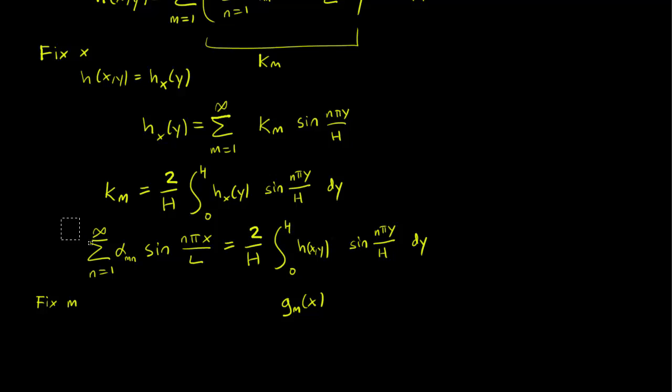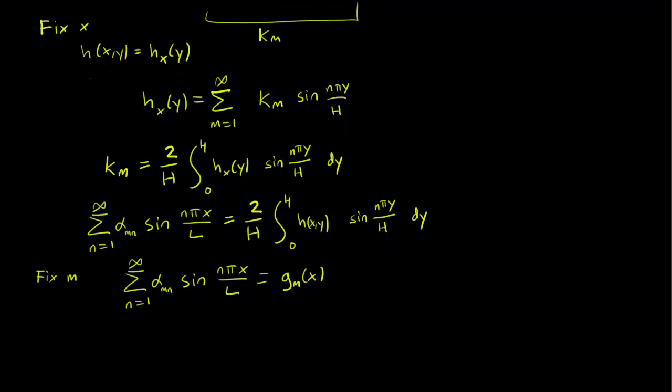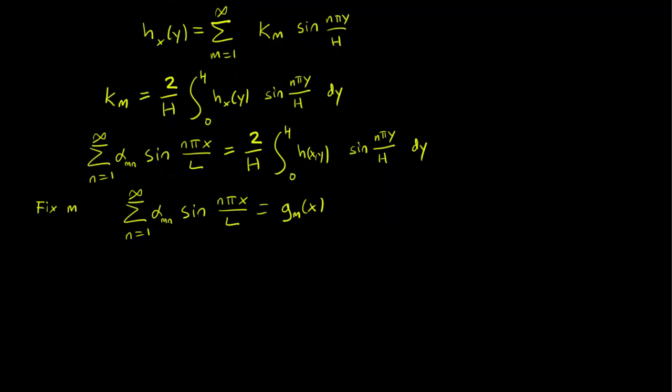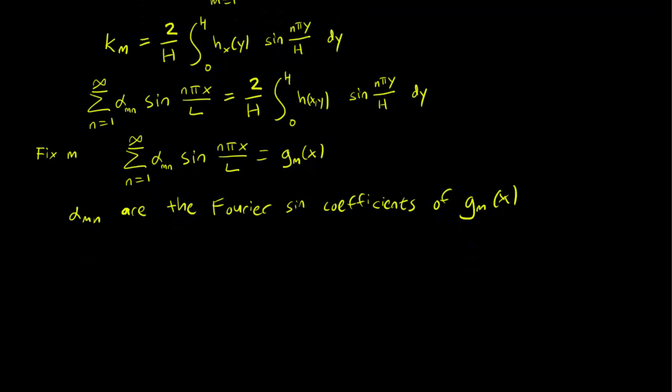And the left-hand side stays the same, of course. But notice now, what we have are that alpha_mn are the Fourier coefficients of g_m(x), the Fourier sine coefficients. And we already know what the formula for those are.